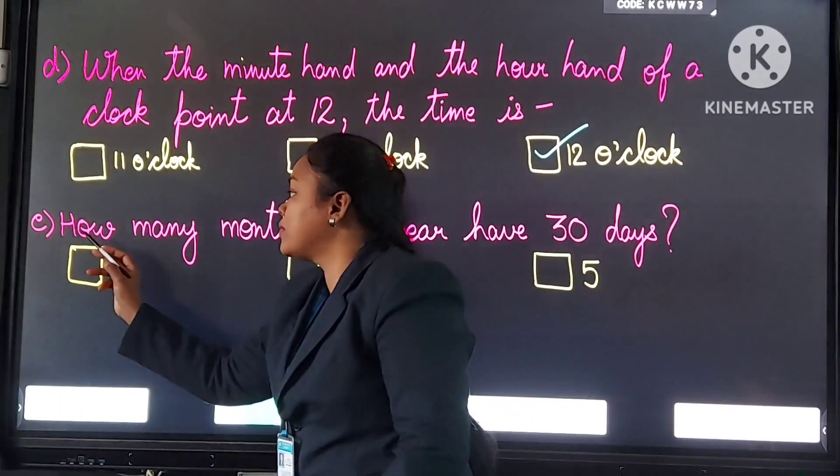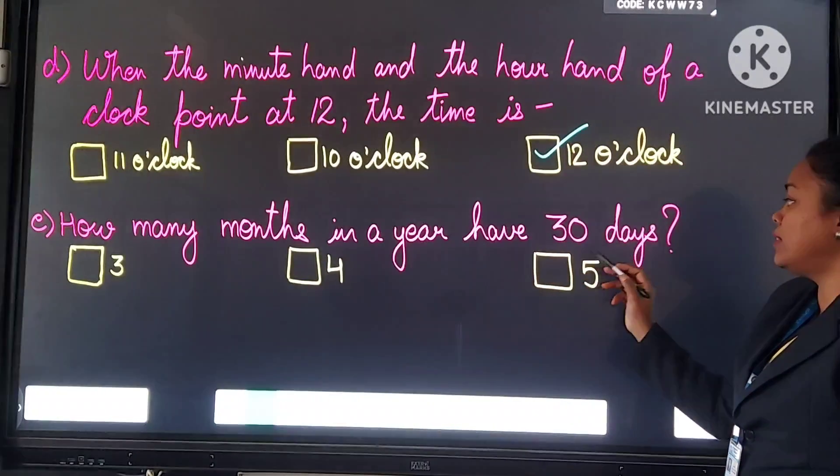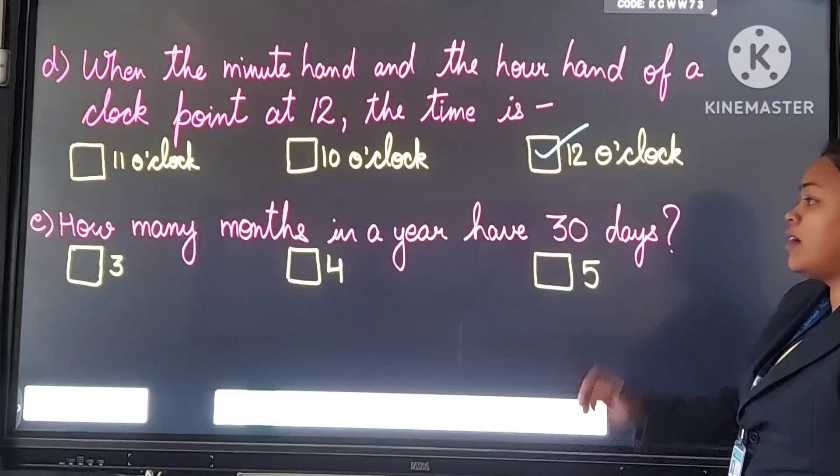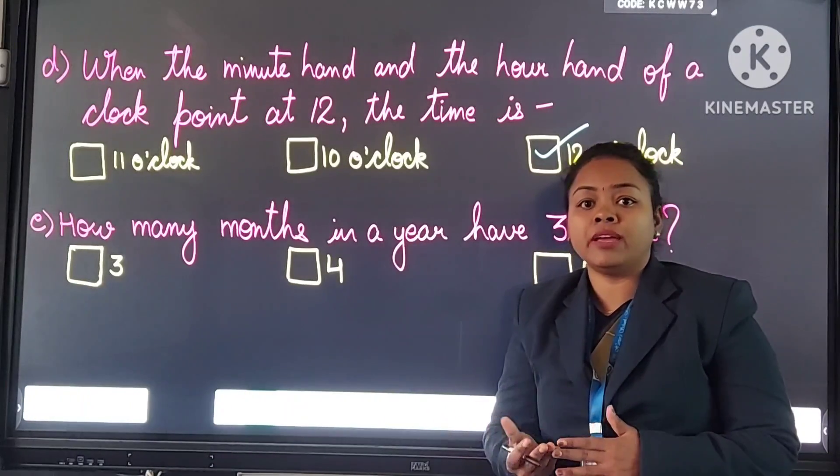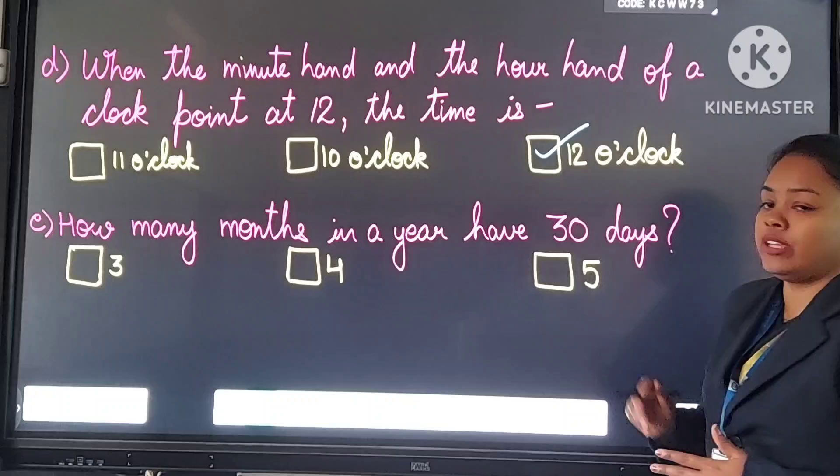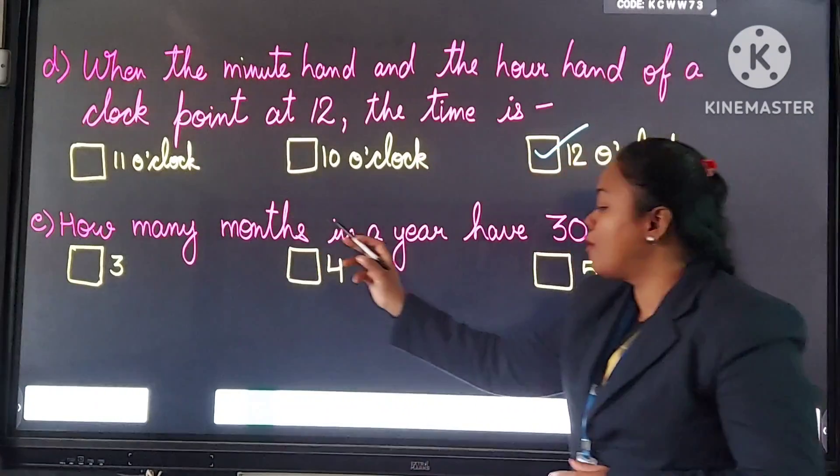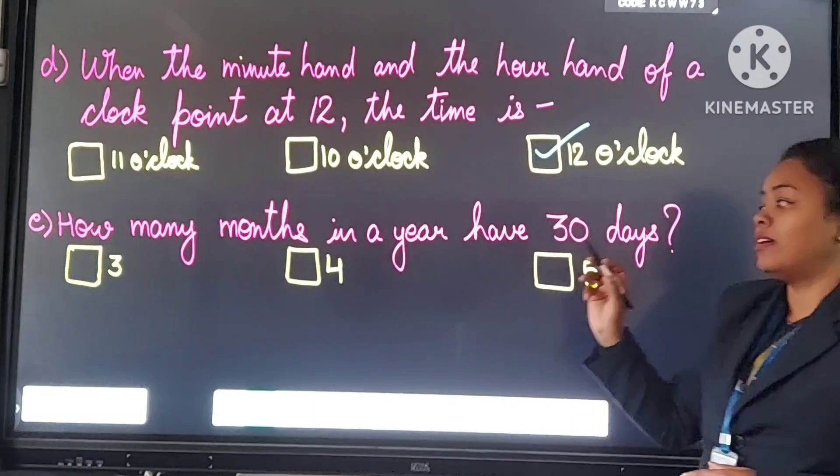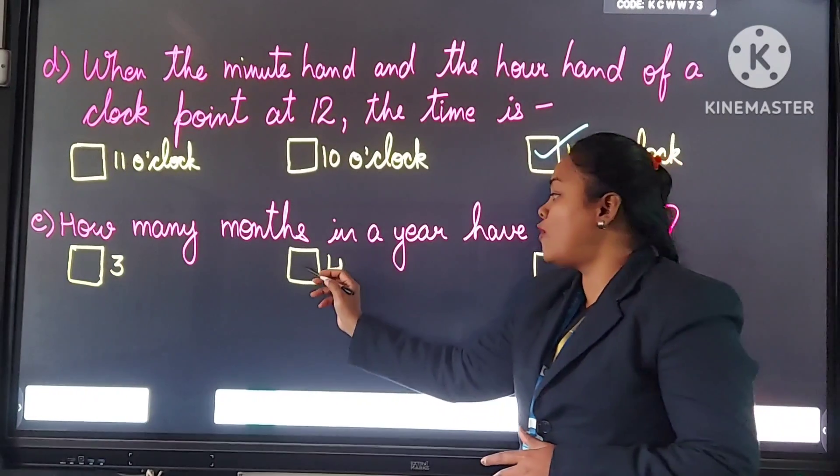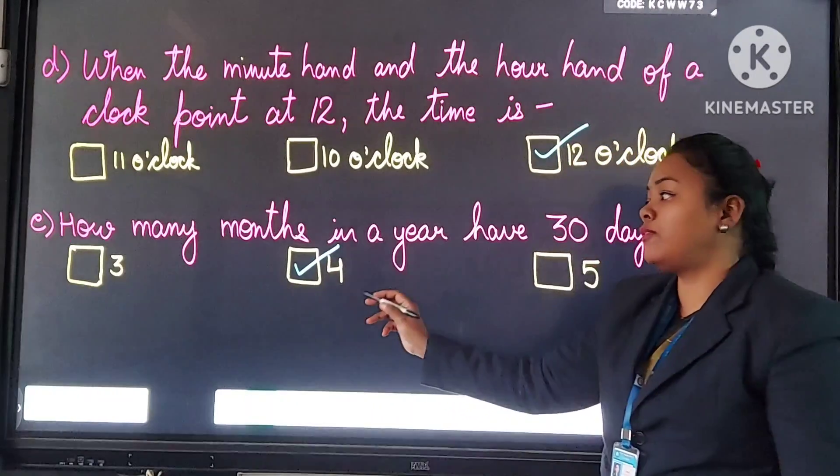Question number E. How many months in a year have 30 days? Abhi pooch raha hai, ek saal ke kitnay mahino meh 30 days hote hai? Options are 3, 4, 5. Answer is 4. Tick here, 4.